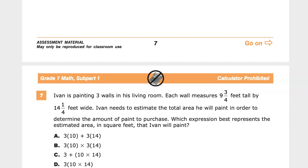It's the grade 7 math practice test for TN Ready, question number 7 on this version. Ivan is painting three walls in his living room. I have an uncle named Ivan. Each wall measures 9¾ feet tall by 14¼ feet wide.